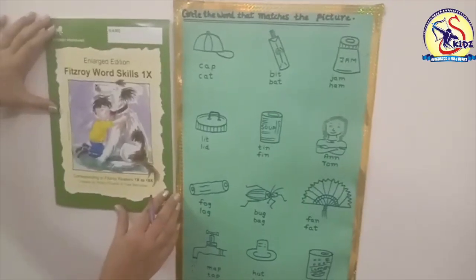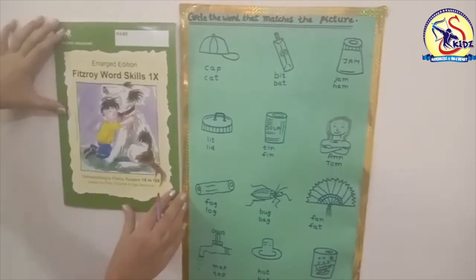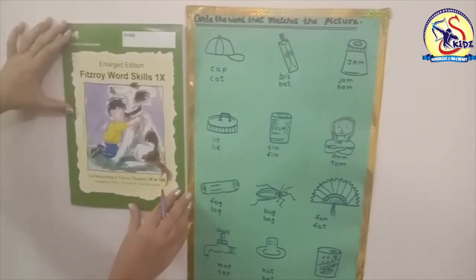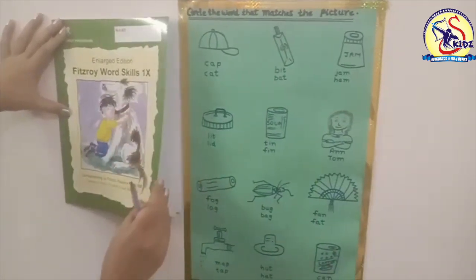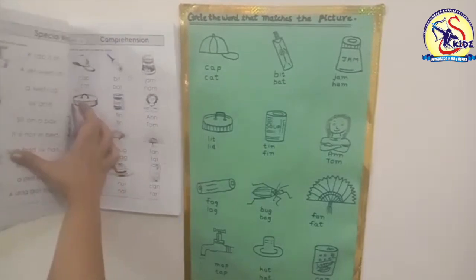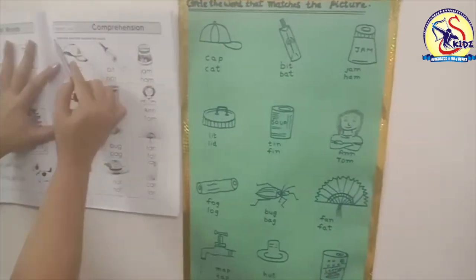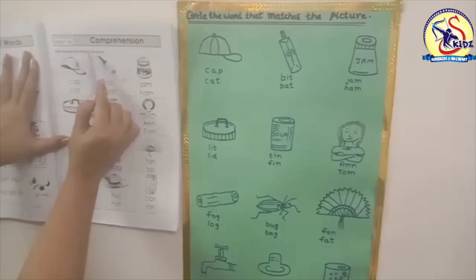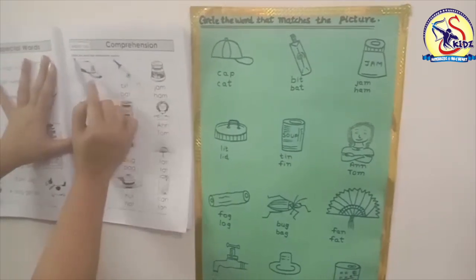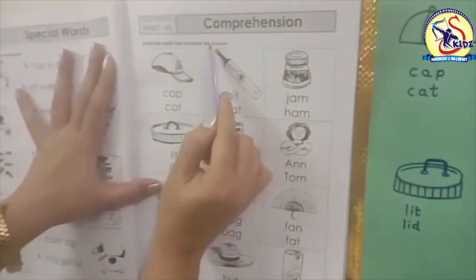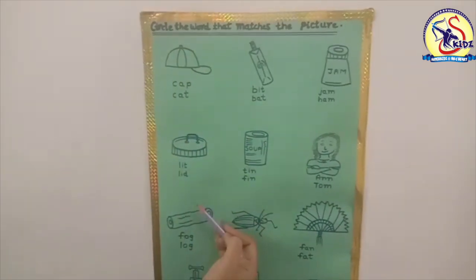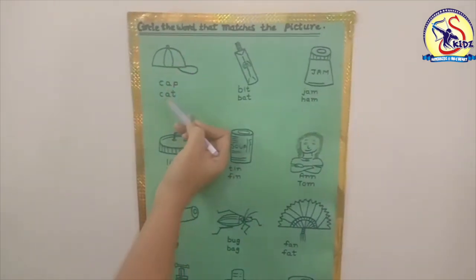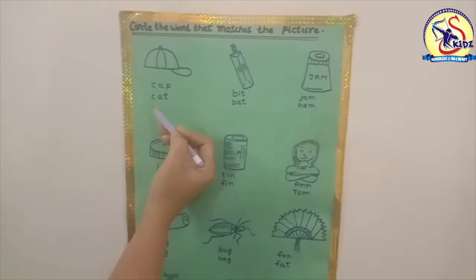Hello students, how are you all? I hope you all are fit and fine. As you all know, this is our book Fitzroy Word Skills. Today we are going to do another exercise from this book. The name of the exercise is 'Circle the word that matches the picture.' Here I have drawn some pictures — you have to circle the correct word that matches with the picture.